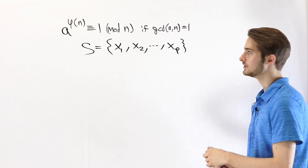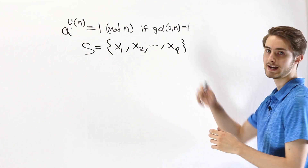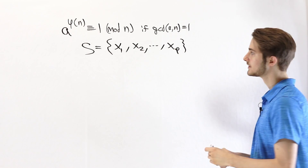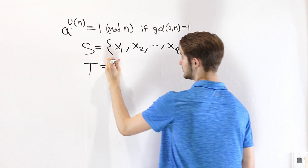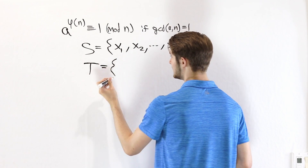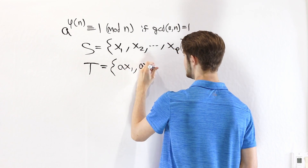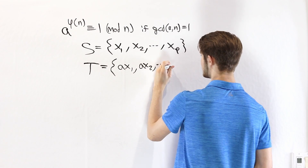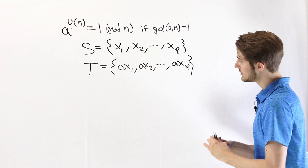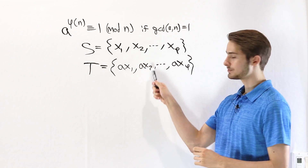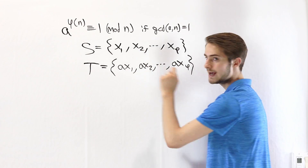What we're going to do is take all of these numbers and multiply them by a. We're going to get a new set, which we call T, that includes ax₁, ax₂, and so on up to ax_φ. These are the same numbers as before, but we're multiplying all of them by the number a.